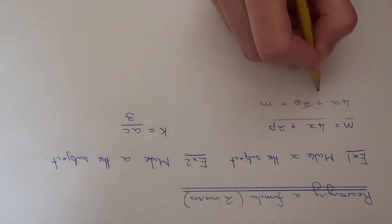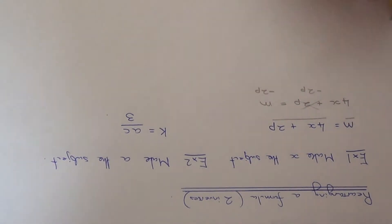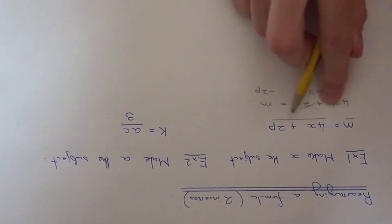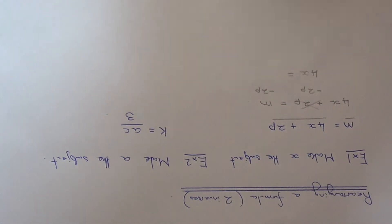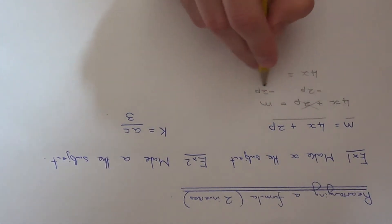To get rid of the plus 2p, we need to do the opposite which is to take 2p off both sides. On the left hand side this will leave us with 4x, and on the right hand side we're going to write that as m minus 2p.